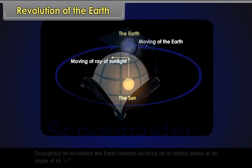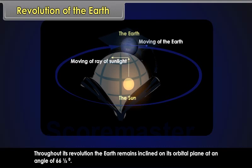Throughout its revolution, the earth remains inclined on its orbital plane at an angle of 66.5 degrees.